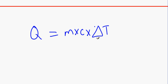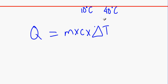This is basically telling us that if the initial starting temperature is 10°C and the final temperature is 40°C, then delta T — the change in temperature — is 30°C, because 40 minus 10 equals 30.